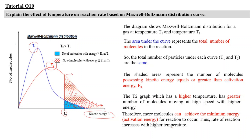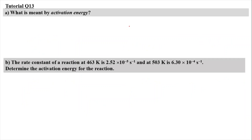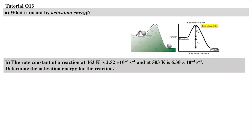This is how we explain the Maxwell-Boltzmann distribution curve. Moving on to question 13: what is meant by activation energy? Activation energy is the minimum energy required for the reactants to initiate a chemical reaction. All colliding particles must have enough energy to overcome the barrier and hence form an activated complex before going into products.